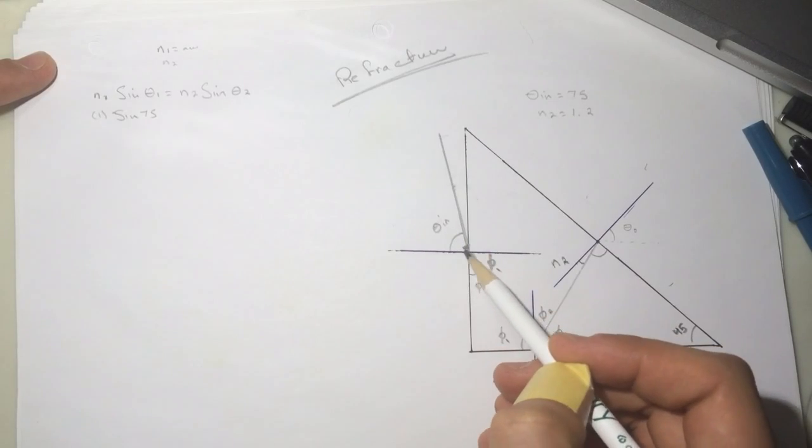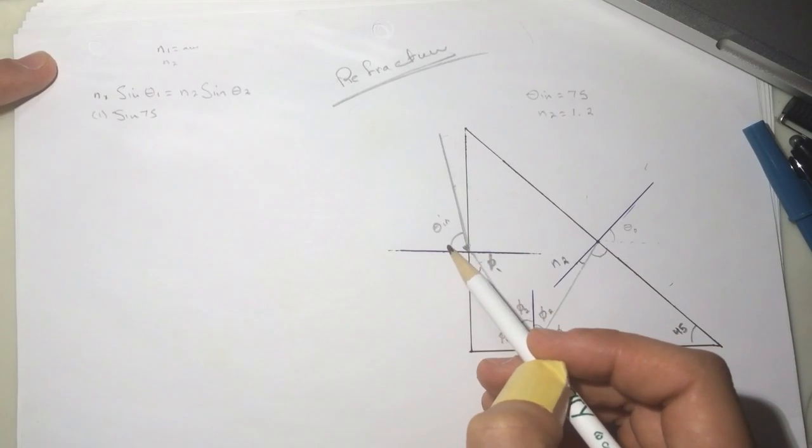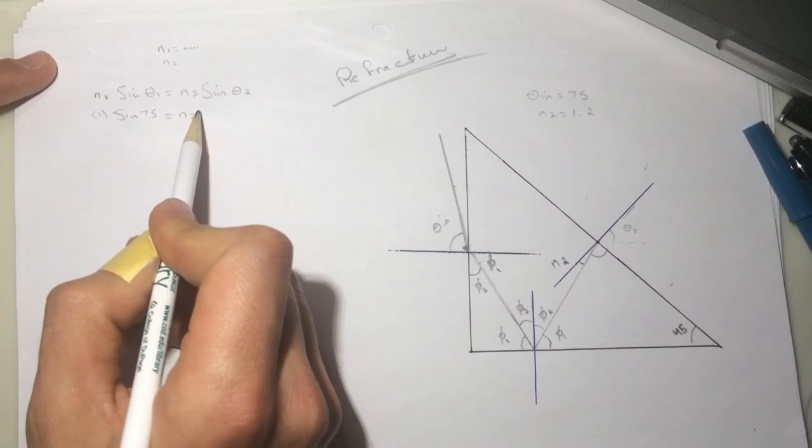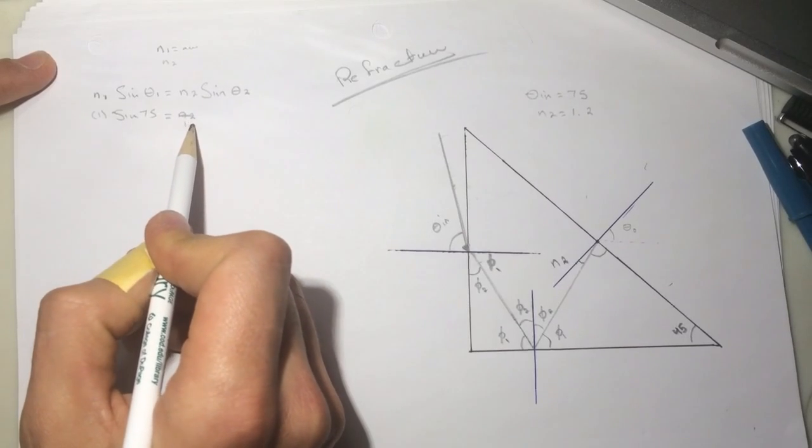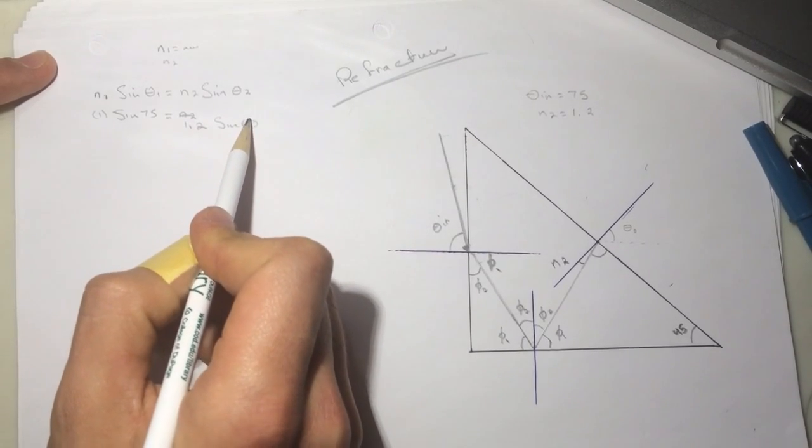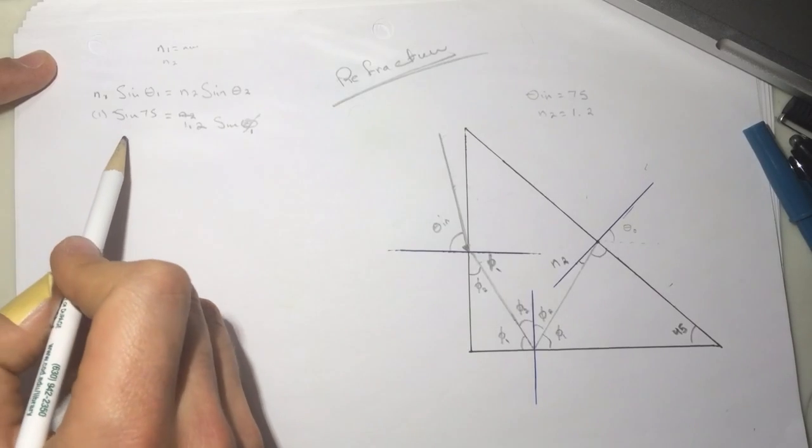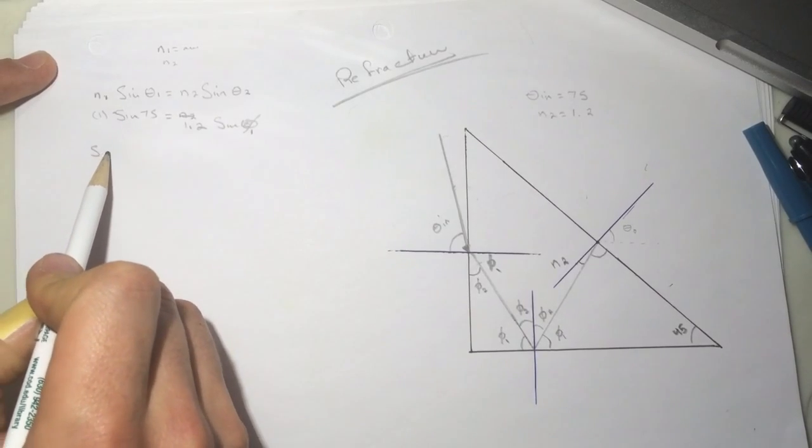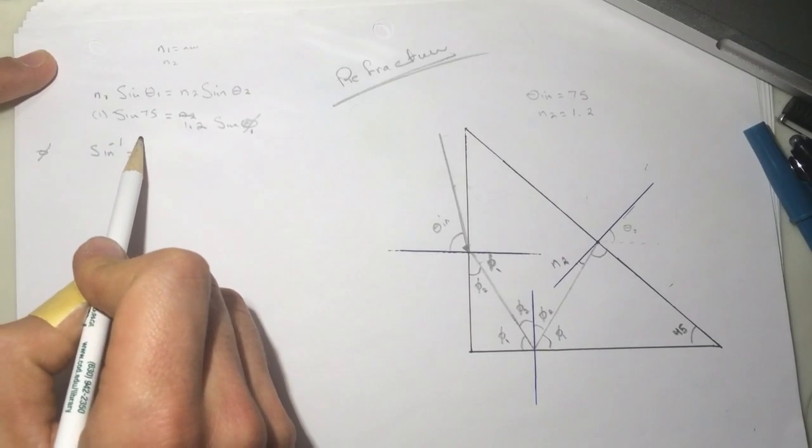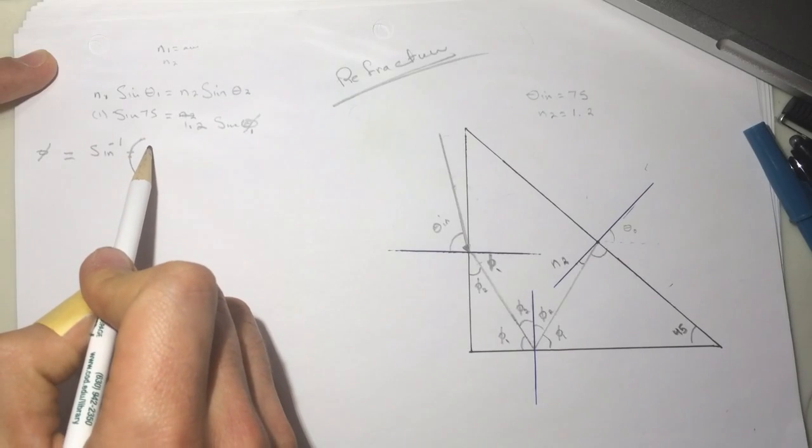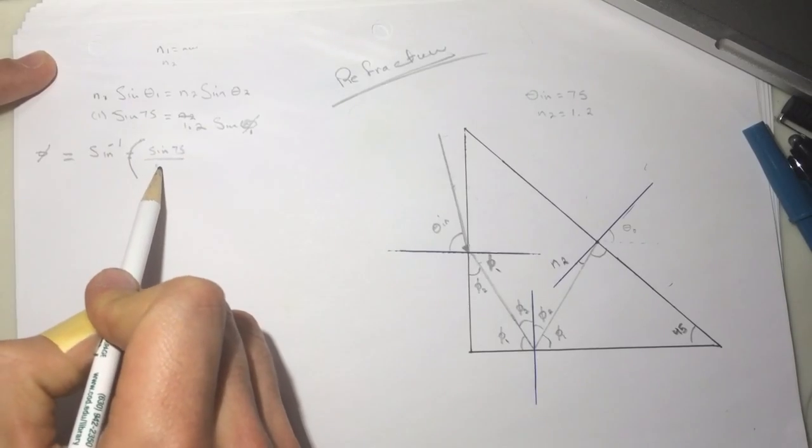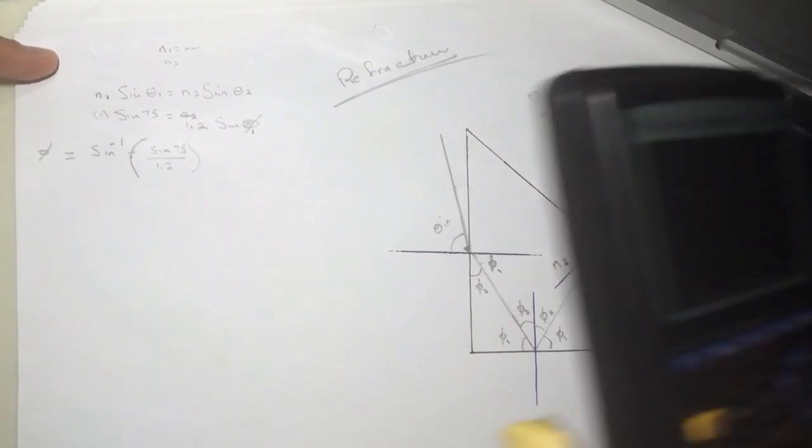This is the angle that's between the perpendicular to the area, the normal to the line, and the light here. So 1.2 sine of phi 1. The sine inverse, so phi 1 will equal sine 75 divided by 1.2.